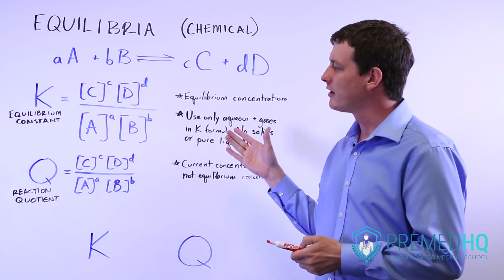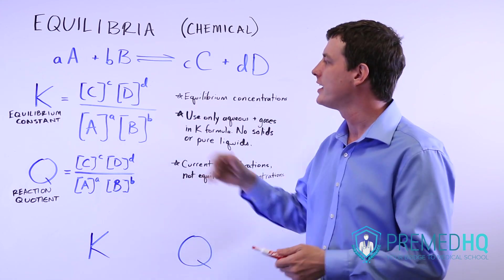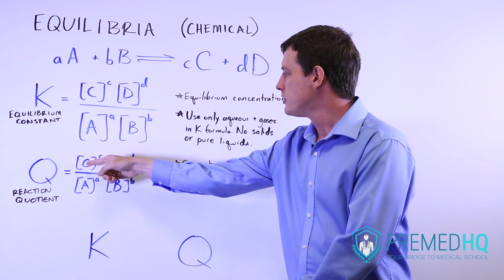And the first way to think about it is just to understand what a high Q means. If Q is higher than K, what that means is that these numbers, the two products, must be greater than the equilibrium concentrations or these two reactants must be lower than the equilibrium concentrations.